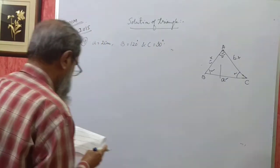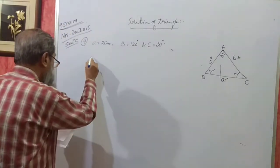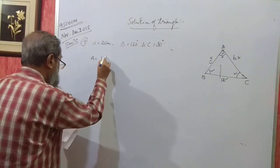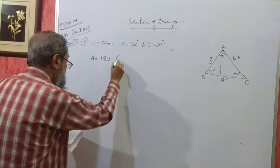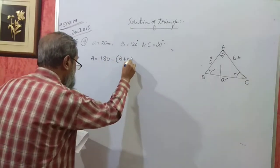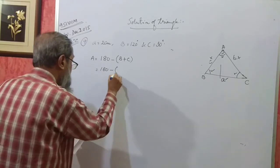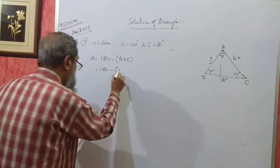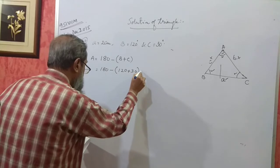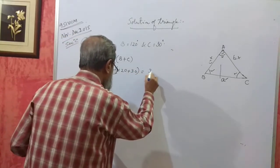Very simple problem. First we can find out angle A. Angle A will be 180 degrees minus the total of B and C. So 180 minus 120 plus 30.